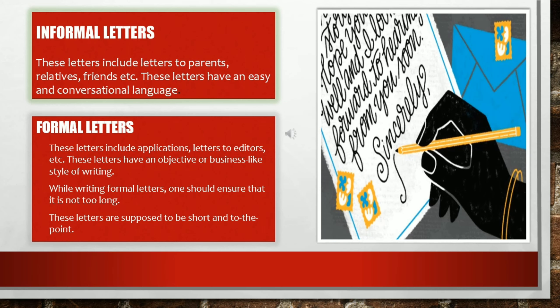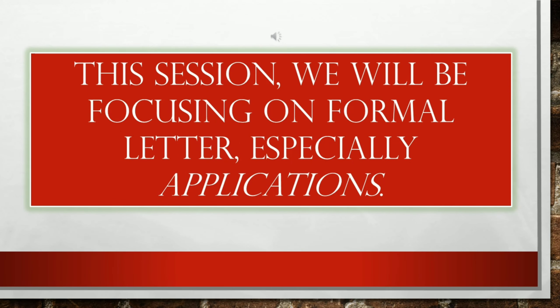Letters are basically of two types: informal letters and formal letters. Informal letters have an easygoing, conversational style and include letters to parents, relatives, friends, etc. Formal letters are written for business purposes and include applications, letters to editors, etc. These are very objective in style. When writing formal letters, one should ensure they are not too long — they are supposed to be short and to the point.